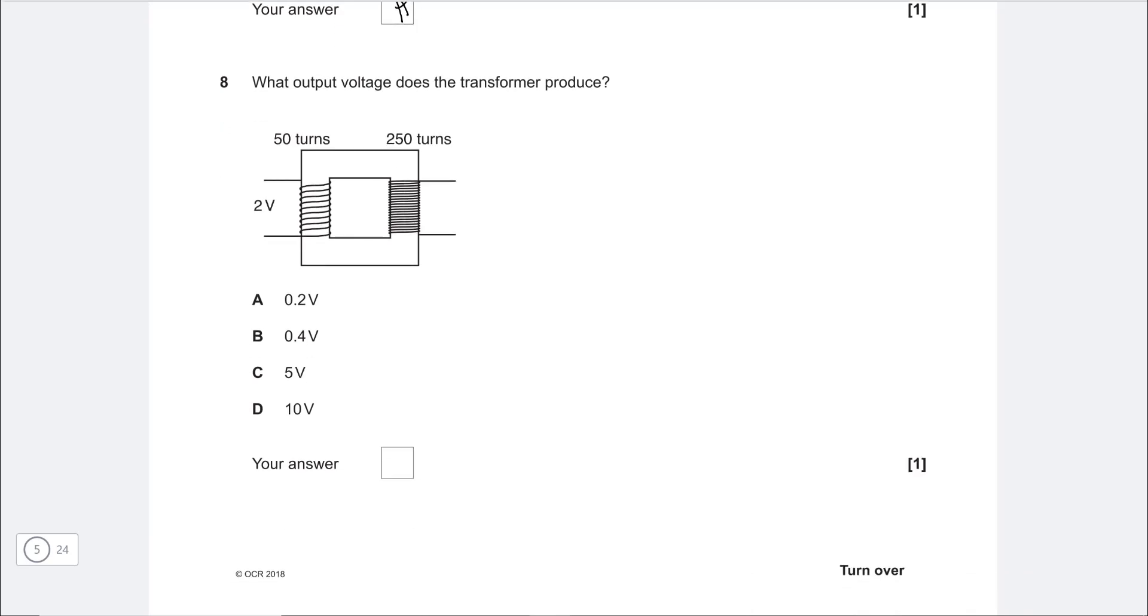Okay, next one, which is about transformers. What output voltage does the transformer produce? So our primary has 50 turns, the other one has 250 turns, which means that the voltage here will be 5 times bigger because 250 over 50 is just equal to 5. So if we have 2 volts on this side, this means we're going to have 5 times as many. So we're going to have 10 volts because 2 times 5 is 10. Correct answer is D.